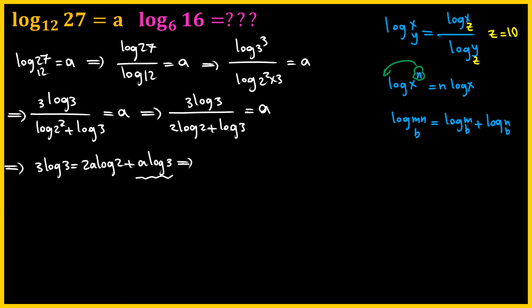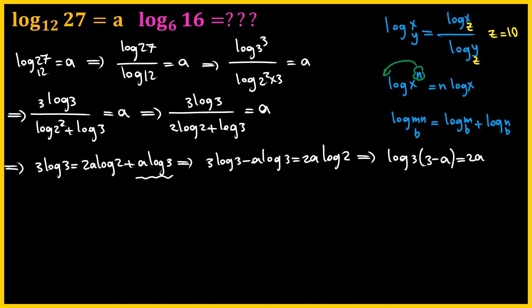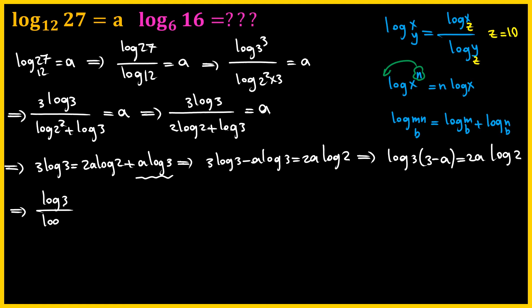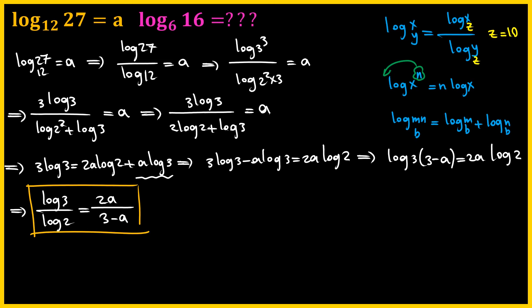We get 3 log 3 equals to 2a log 2 plus a log 3, and then if you move this to the left hand side, we get 3 log 3 minus a log 3 equals to 2a log 2. And if you pull out log 3, we get log 3 times (3 minus a) equals to 2a log 2. And then from this equation, we get something very nice: log 3 over log 2 equals to 2a divided by (3 minus a). And this is a very important result from the given information, and I'm going to use this ratio to evaluate log 16 with base 6.